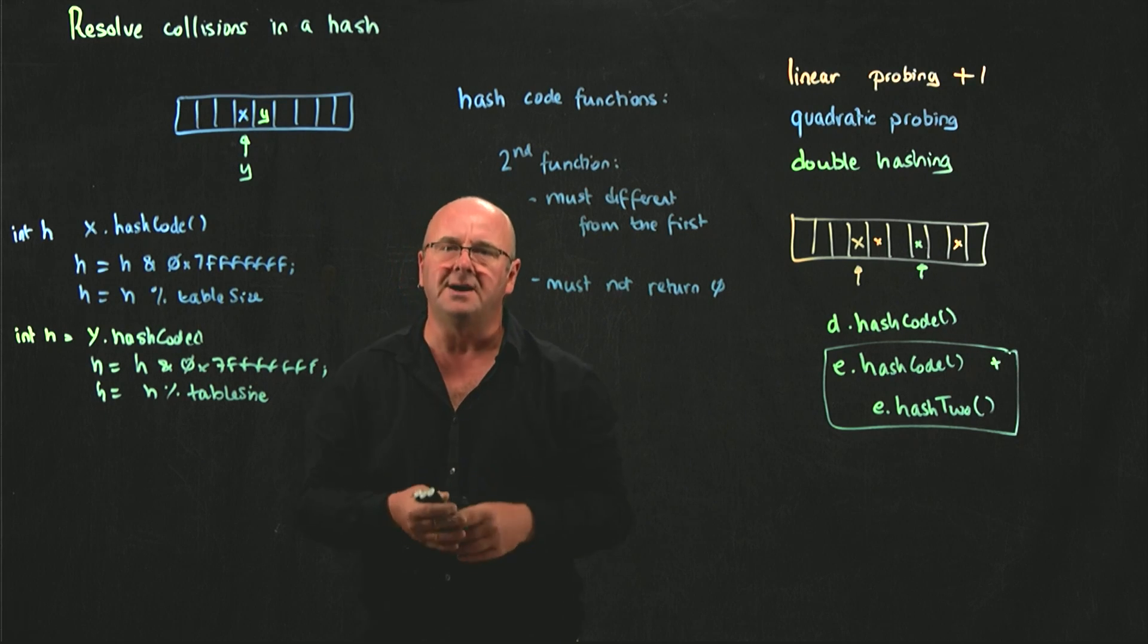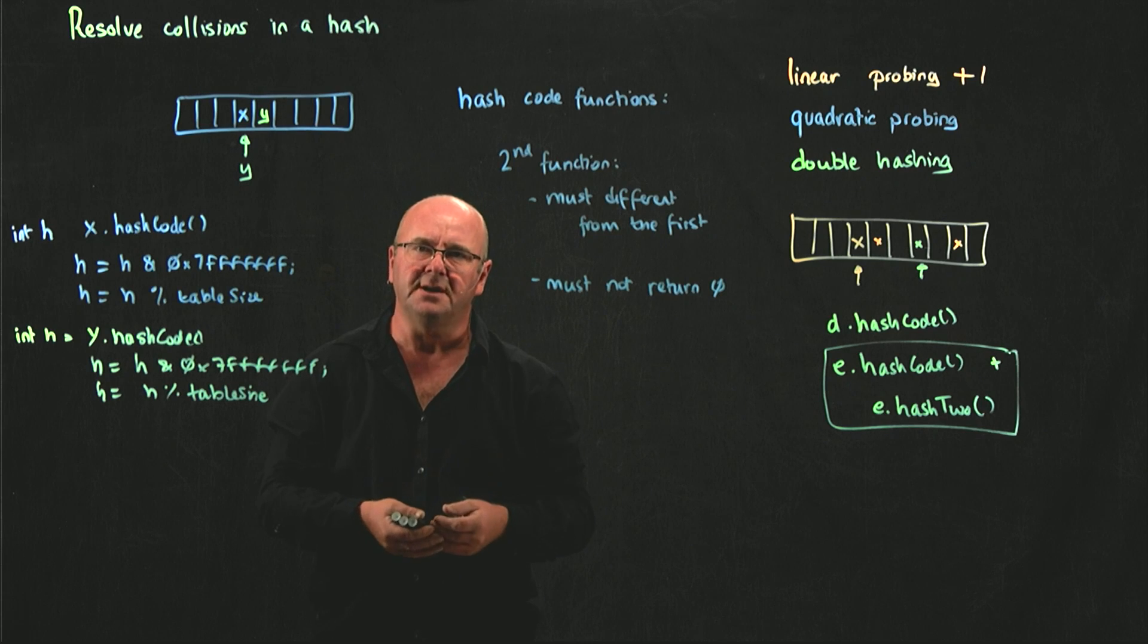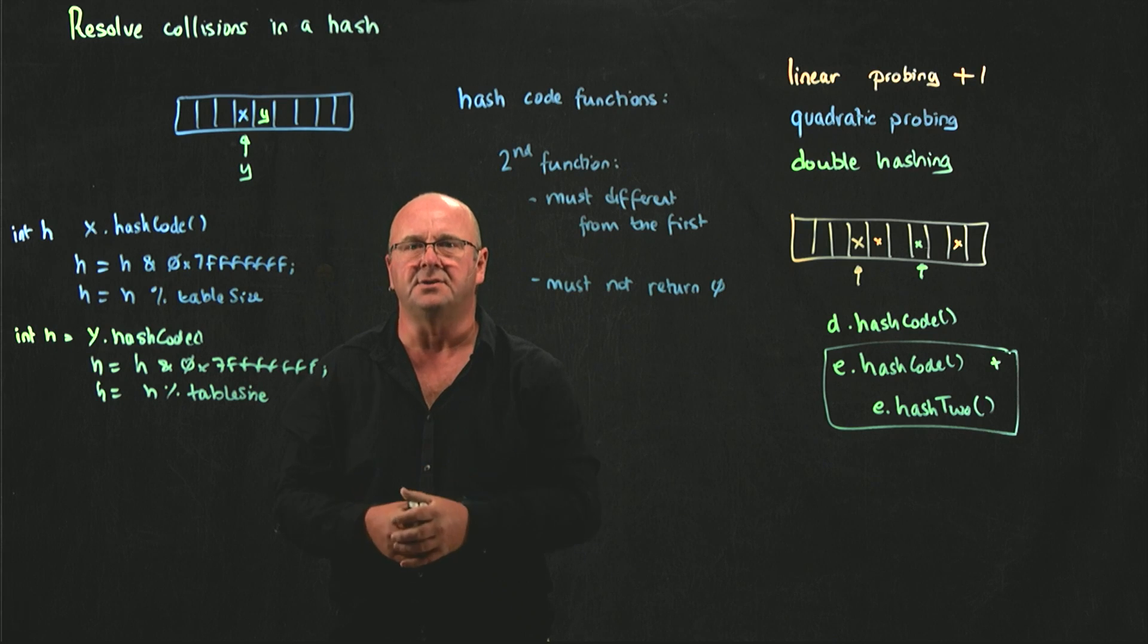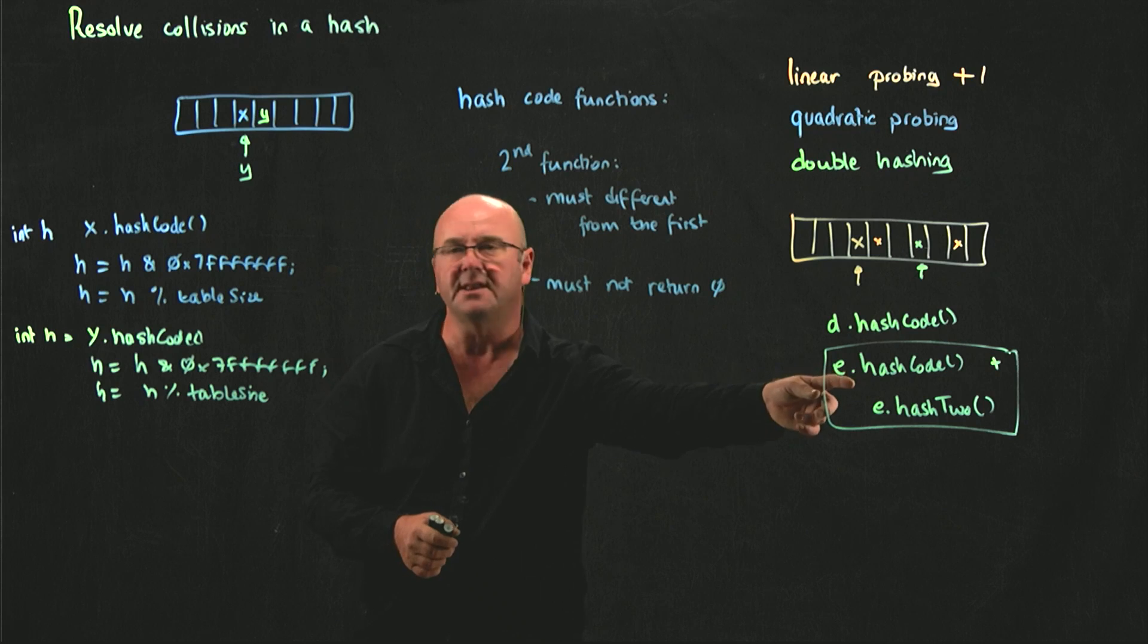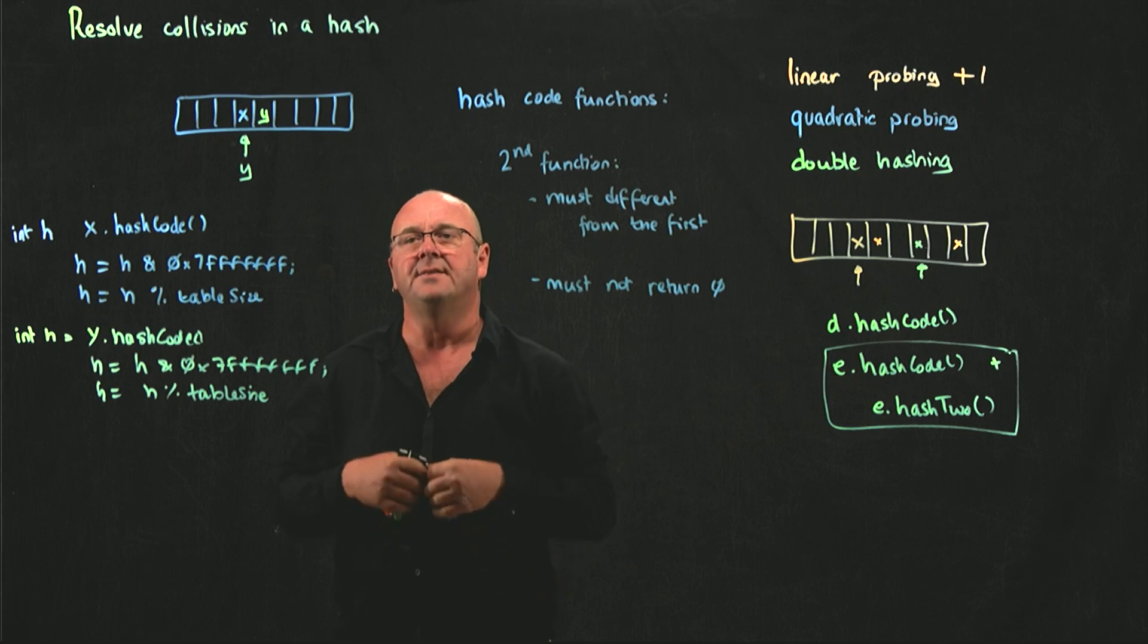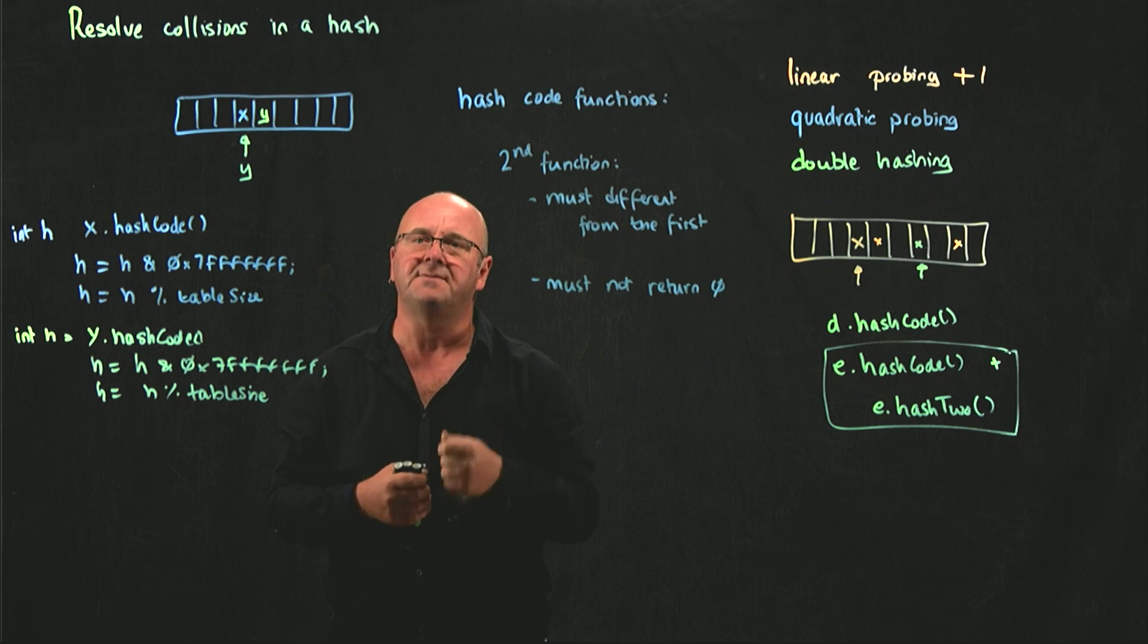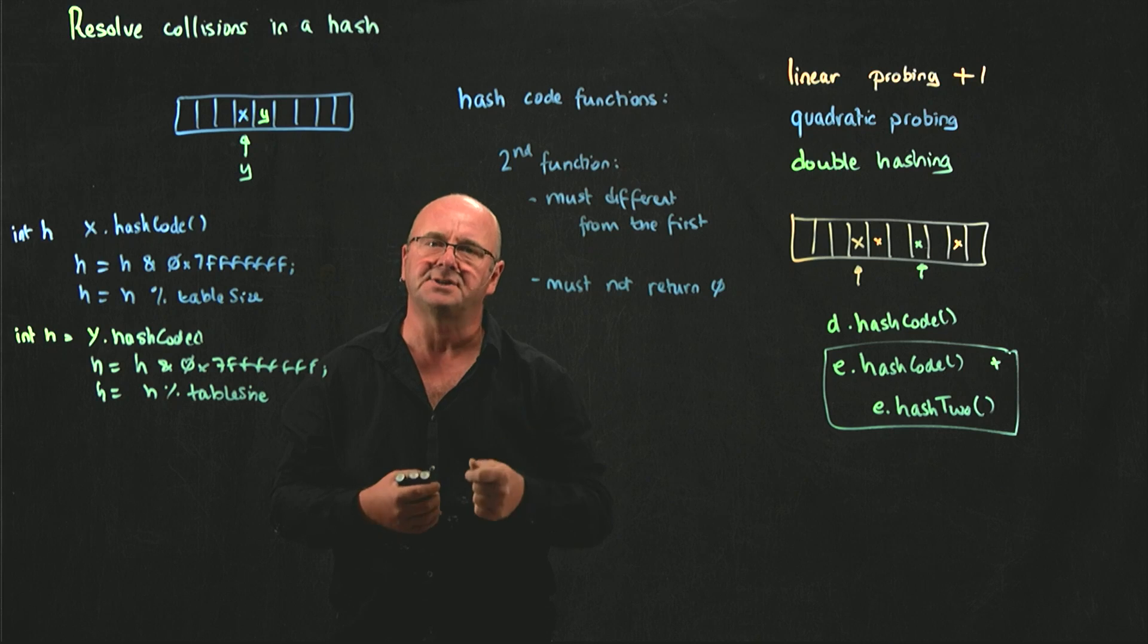And Java has no way of ensuring that there's a second hash function in the data object. It has a way of ensuring the hash code is there, and that's because, as you remember, every object is an object, and every object has a hash code function.